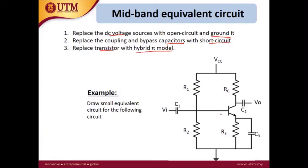This circuit is a common emitter configuration because the input is connected to the base and the output is connected to the collector, so the emitter is unused. This is a common emitter.